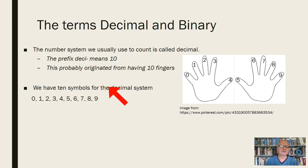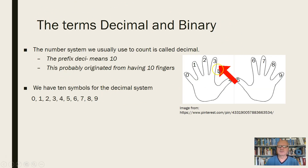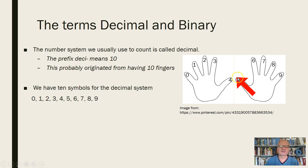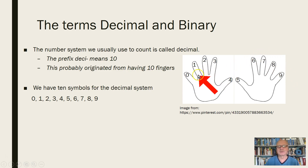Let's take a look at something that confuses some people. First of all, we understand that 'deci' means 10. We have 10 fingers, and so the decimal system that we're familiar with probably originated from the fact that we have 10 fingers.